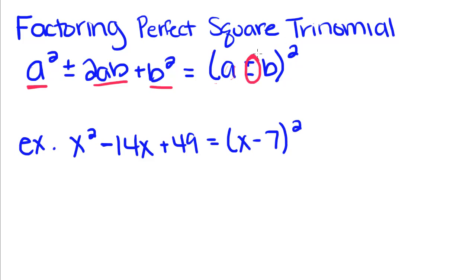The plus or minus in the parentheses depends on whether this is a plus 2ab or a minus 2ab. For this example, x squared minus 14x plus 49, we have to make sure that x is a perfect square — which it is — and that 49 is a perfect square, which is 7 squared.